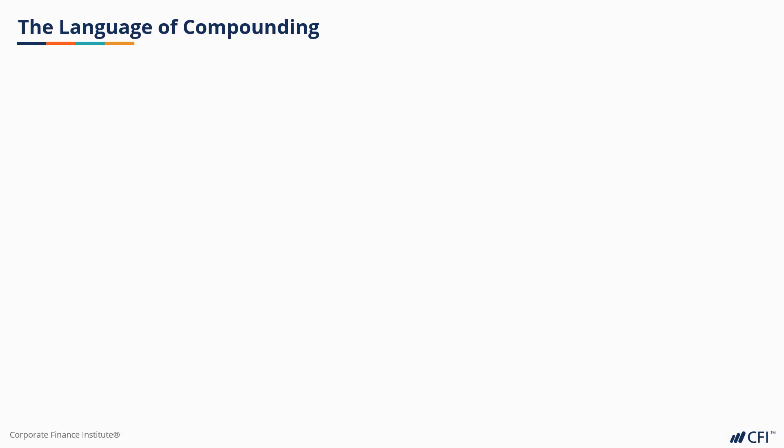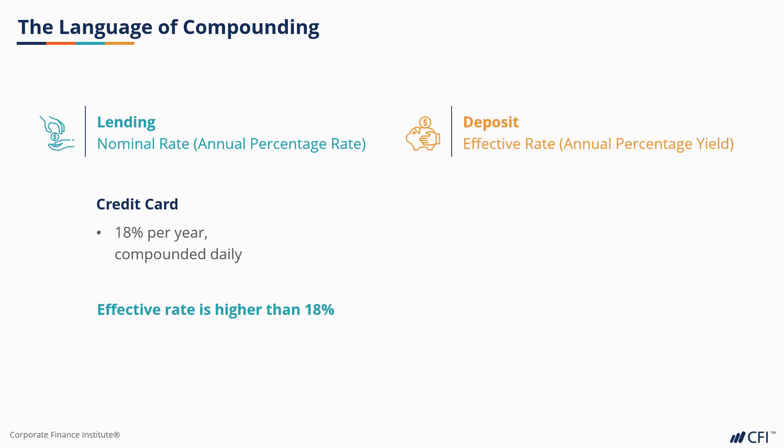This is most important when it comes to lending and borrowing money. Banks may advertise loans at a nominal rate, sometimes referred to as APR or annual percentage rate, but the effective rate would be higher due to the fact that you include compounding. On the other hand, banks may pay interest on deposits based on an effective rate, also called APY, annual percentage yield, as it sounds higher than the nominal rate.